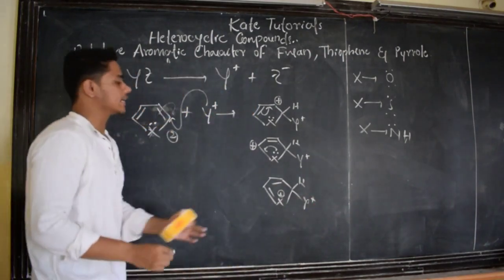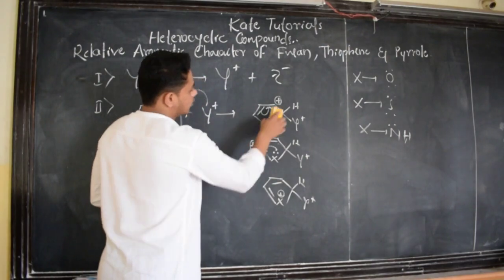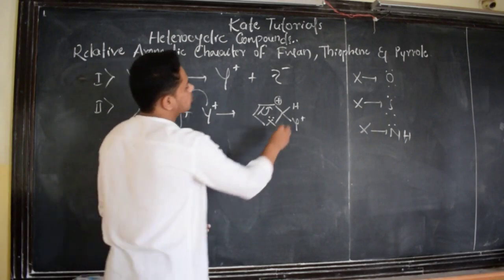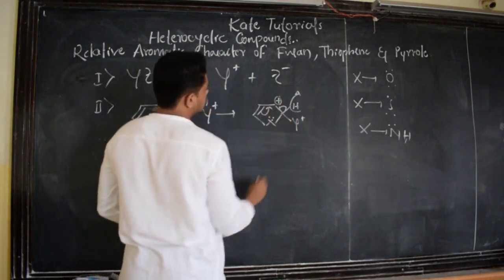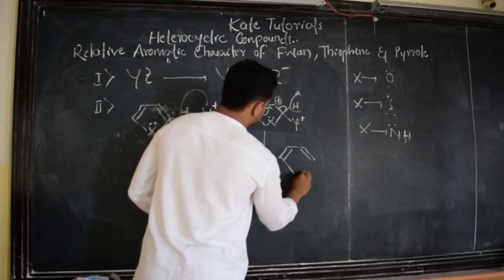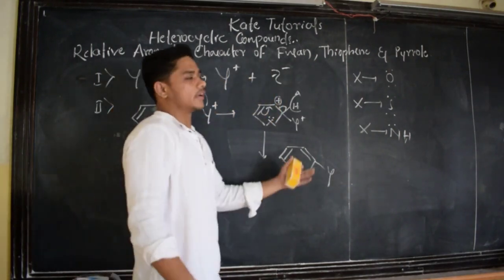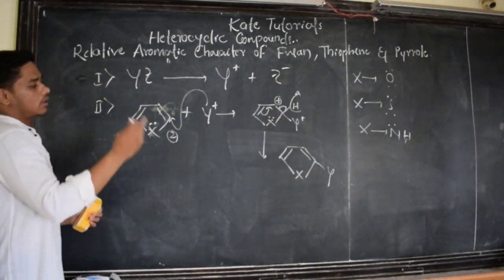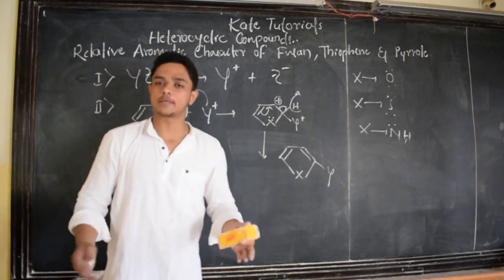These are the three resonance structures. Then what happens is one of the resonance structures loses this hydrogen as a proton, and this electron pair is restored. The final product we get is the 2-substituted compound — that is 2-substituted thiophene, furan, or pyrrole. This is the mechanism for electrophilic substitution.